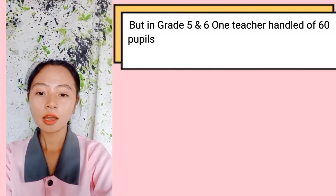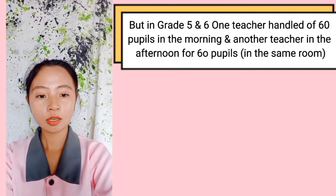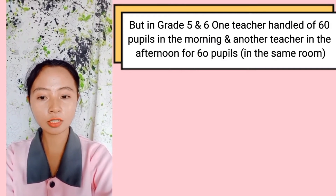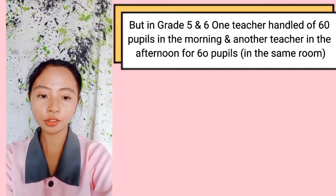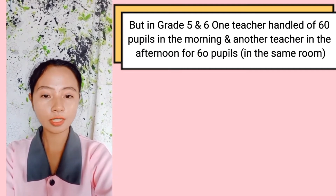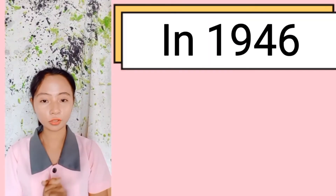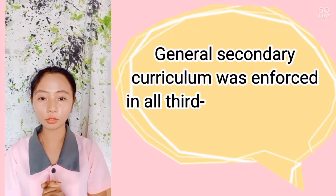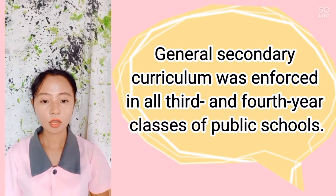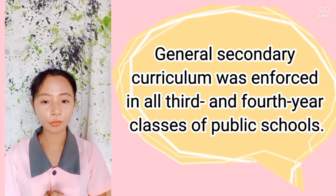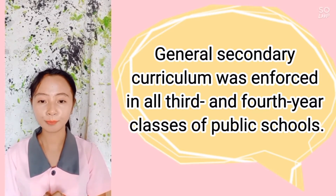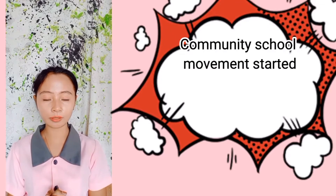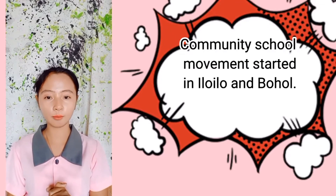In grades 5 and 6, one teacher handled 60 pupils in the morning and another teacher handled 60 pupils in the afternoon in the same room. In 1946, the general secondary curriculum was implemented in all third and fourth year classes in public schools. In 1949 and 1950, the community school movement started in Iloilo and Bohol.